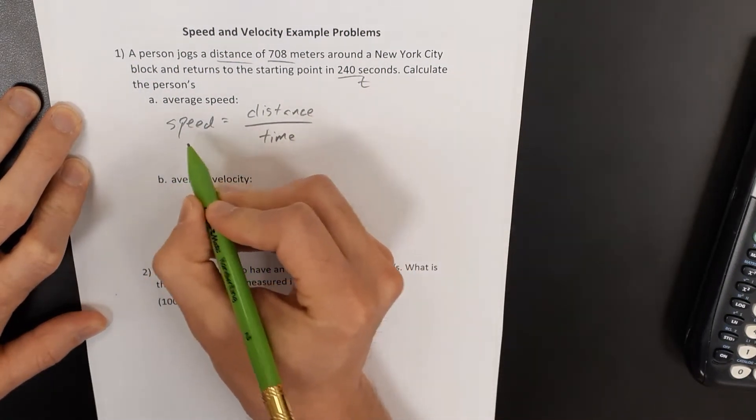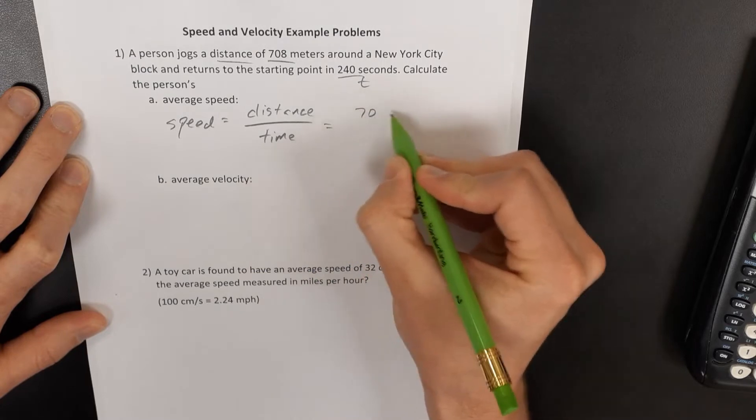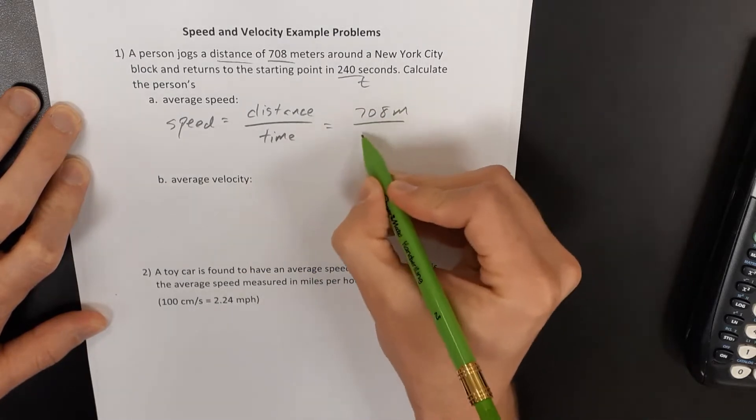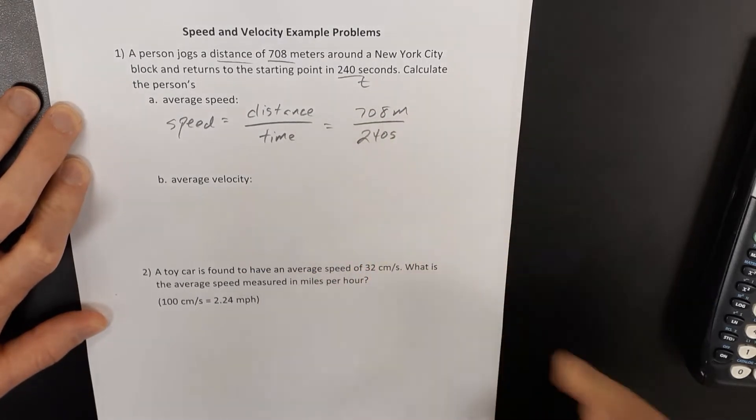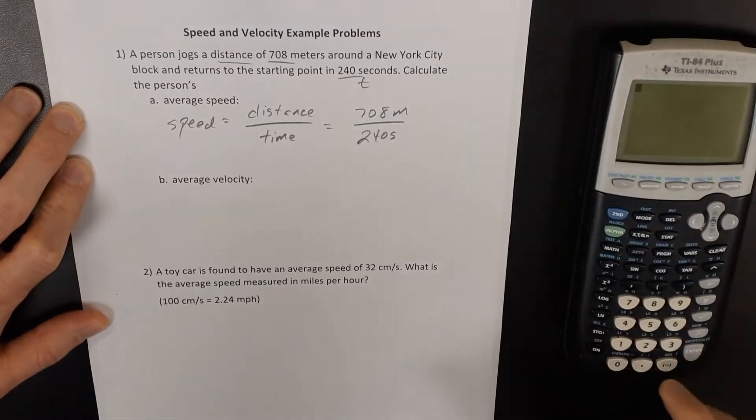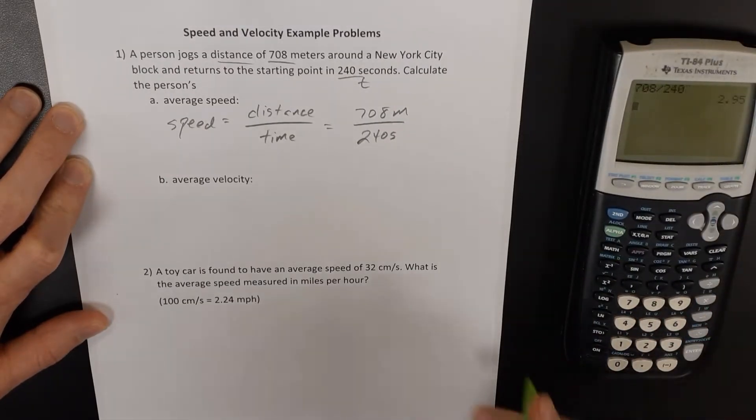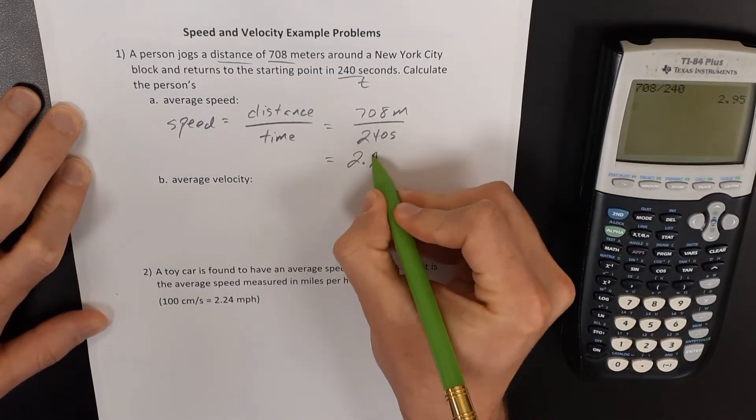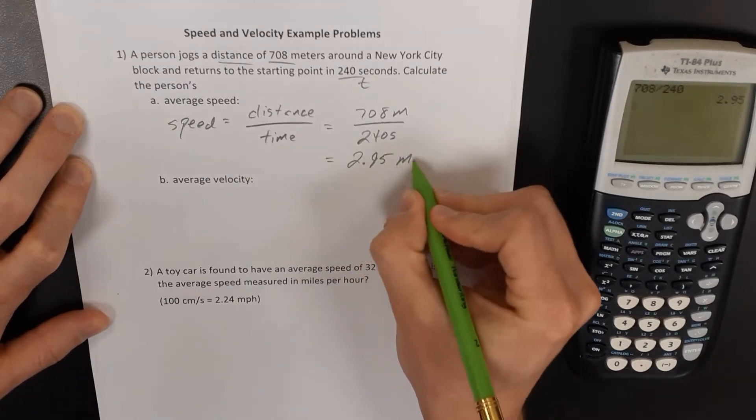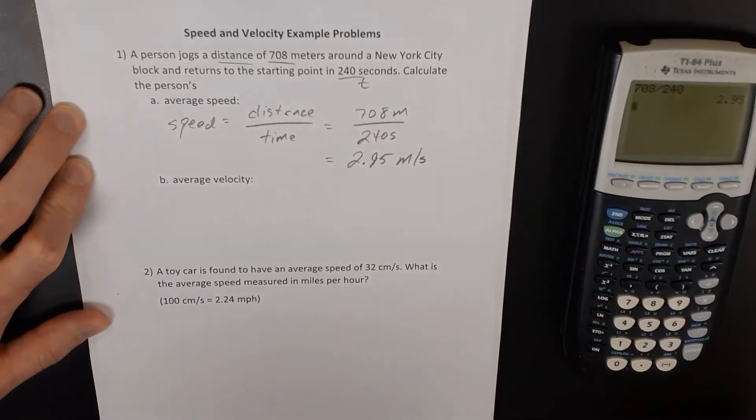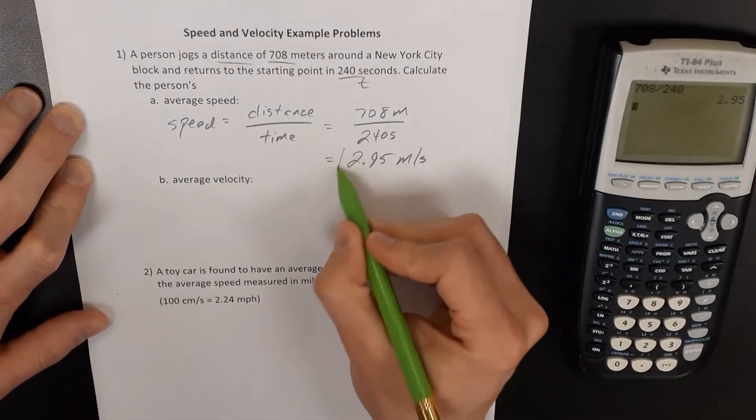It really is, like I said, the average speed. So we want to take those 708 meters, divide that by my 240 seconds. And so 708 divided by 240, I get 2.95 meters per second for my average speed.